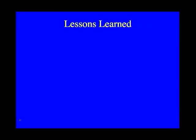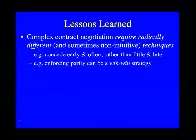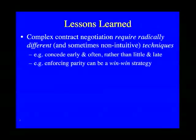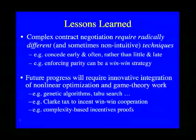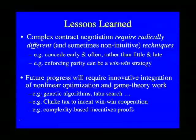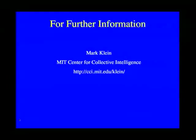Lessons learned from work to date include that complex contract negotiation requires radically different and sometimes non-intuitive techniques. For example, in complex negotiation it can make sense to concede early and often, rather than little and late as with simple contracts. Future progress will require innovative integration of nonlinear optimization and game theory. For more information about this work, you can contact Mark Klein at the MIT Center for Collective Intelligence.